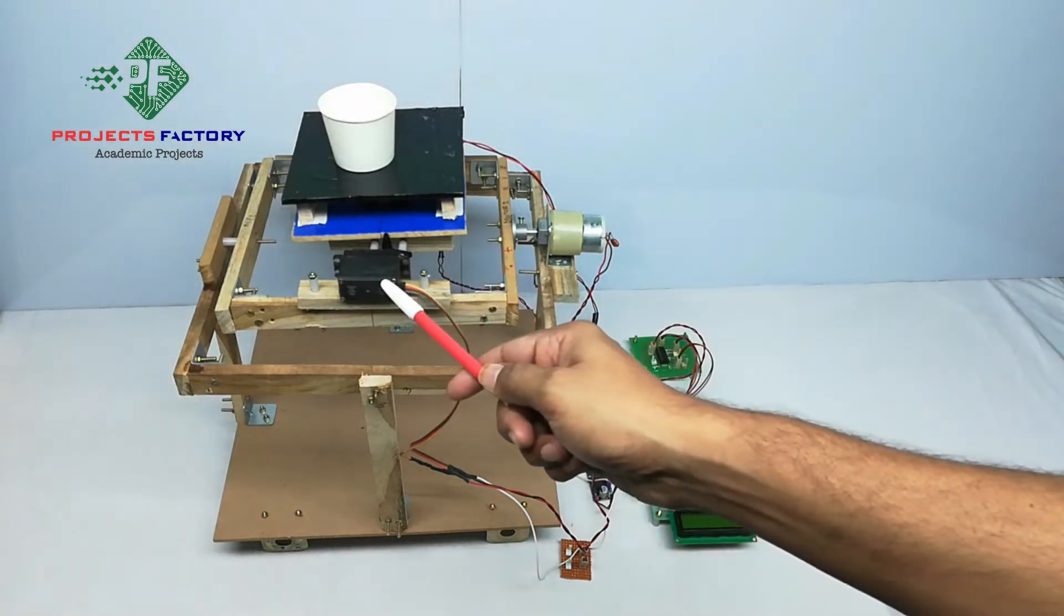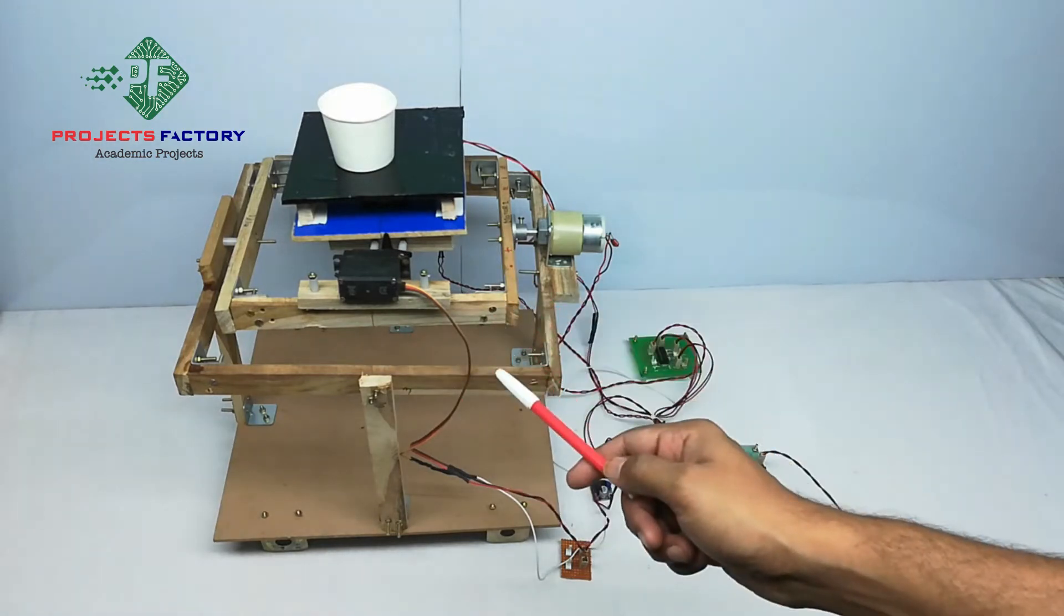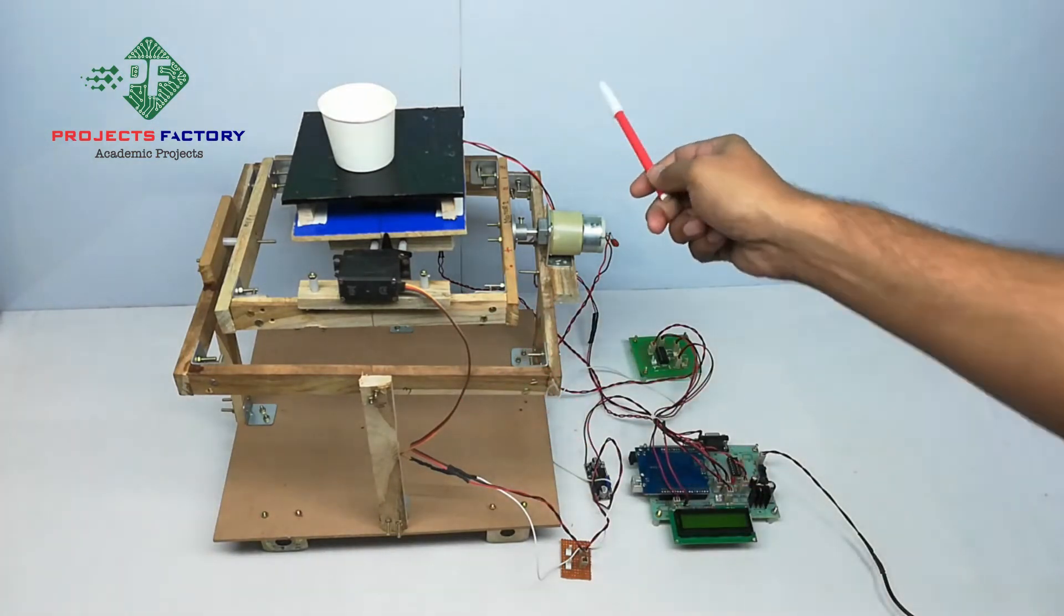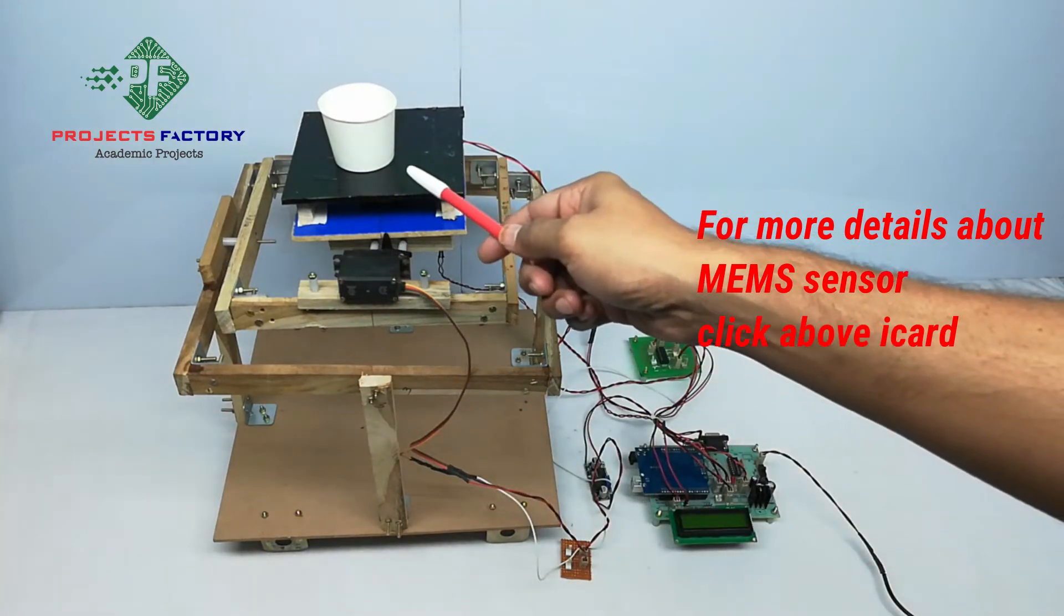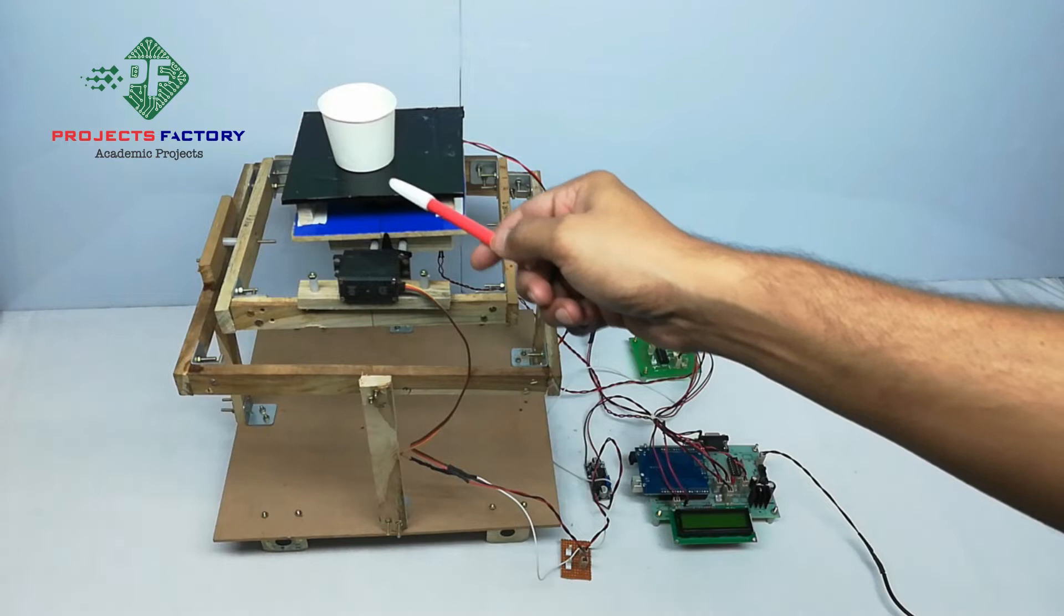The dual axis self-balancing platform has X axis and Y axis moving mechanisms. On top of this we can place any object which stays stable along with the mechanism.